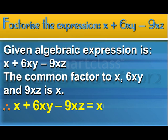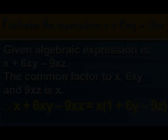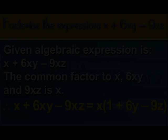To obtain x plus 6xy minus 9xz equals x multiplied by 1 plus 6y minus 9z.